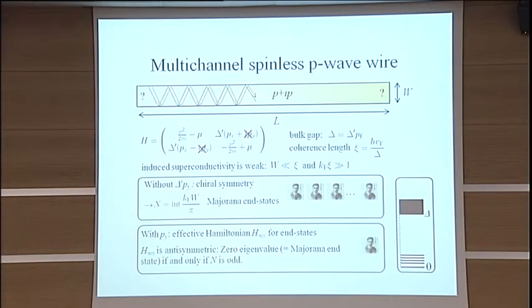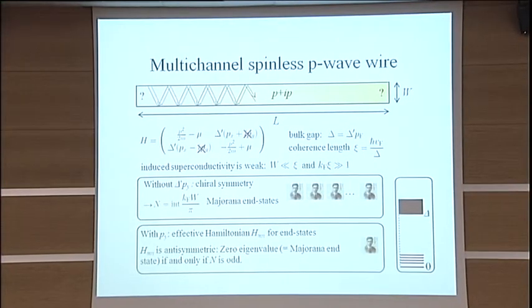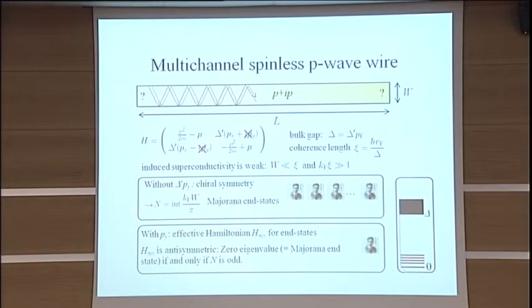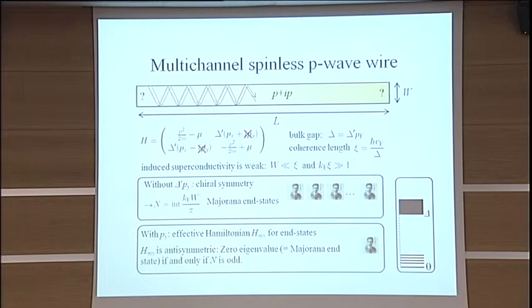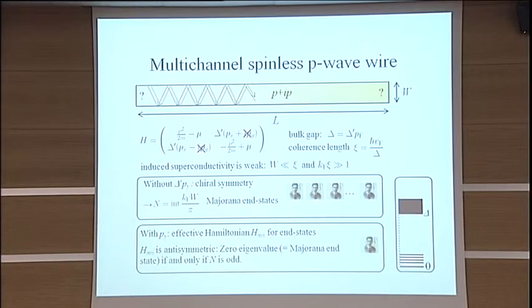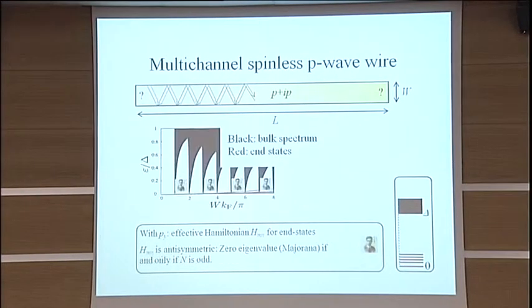If you now treat your term that I left out in perturbation theory, you will find that your N Majoranas at the end will split again. If you have an odd number, one of them will remain. If you have an even number, nothing is left. So what you will see at the end, there will be these N levels, one of them at zero if you have an odd number, or zero if you have an even number, and the other ones will stay close to zero energy.